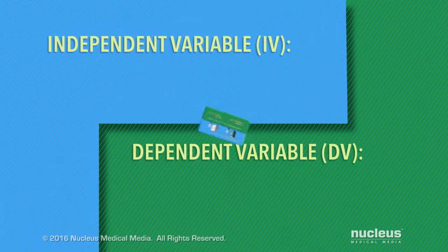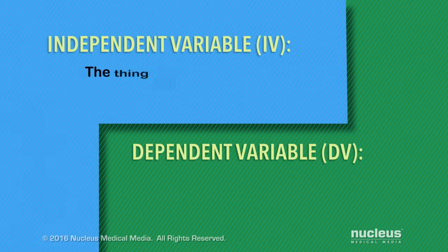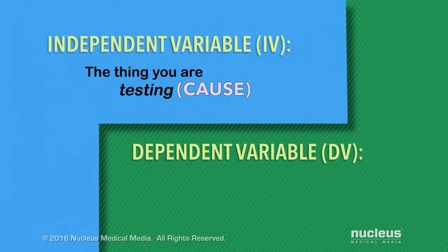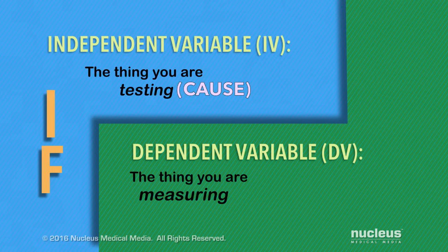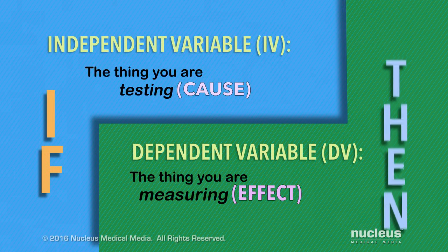So, to review: the independent variable is the thing that you're testing. Sometimes this is referred to as the cause in an experiment — it is also the 'if' part of your hypothesis. The dependent variable, the thing you're measuring, is the effect. It is also the 'then' part of your hypothesis.